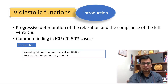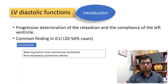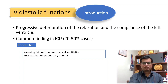Diastolic dysfunction means that the ventricles do not properly relax and become stiff, meaning they cannot fill with blood properly. It is a common finding in ICU patients. About 20-50% of patients in ICU may have some degree of LV diastolic dysfunction.